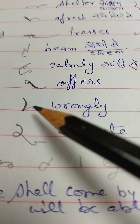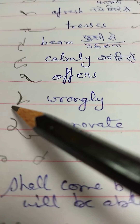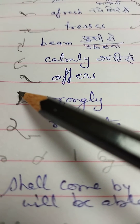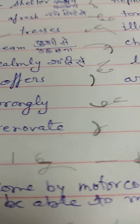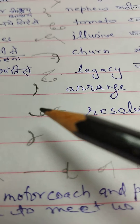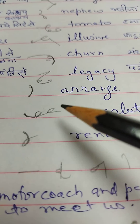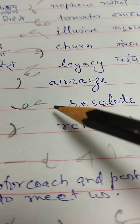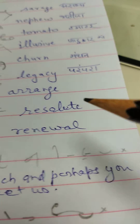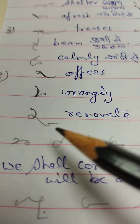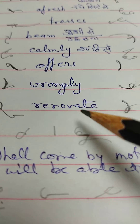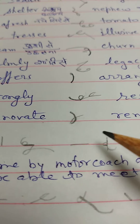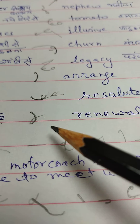Wrongly. This is naga and darken. Wrongly, wrongly, resolute, renovate, renewal.